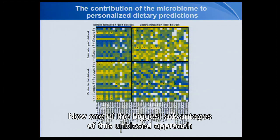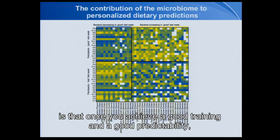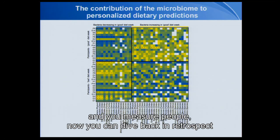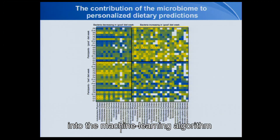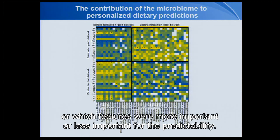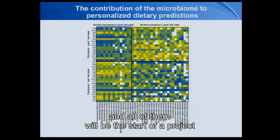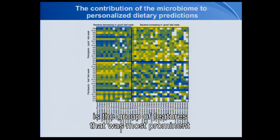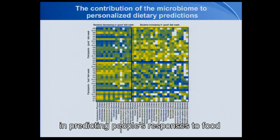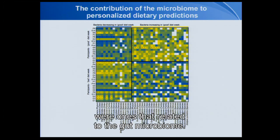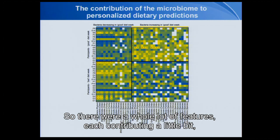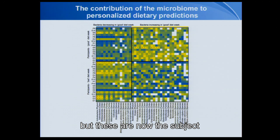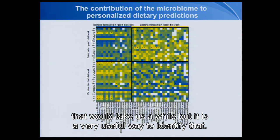One of the biggest advantages of this unbiased approach is that once you achieve good training and good predictability, you can dive back into the machine learning algorithm and ask it which features were most important for predictability. You can then take these features and they each become the start of a project testing them mechanistically. What we were really happy to see is that the group of features most prominent in predicting people's responses to food were ones related to the gut microbiome — a whole lot of features, each contributing a little bit, now subject to regular mechanistic investigation.